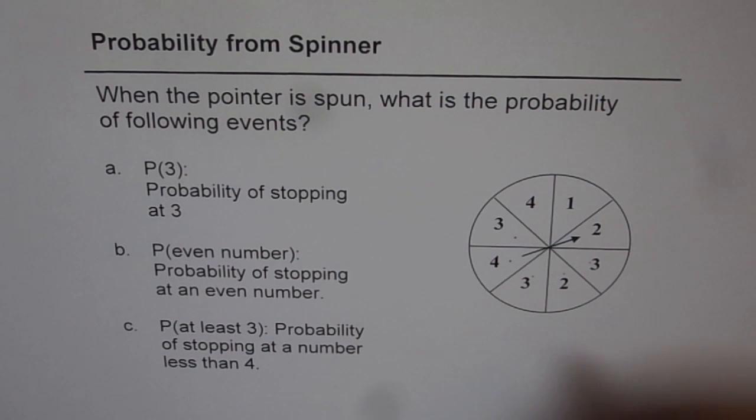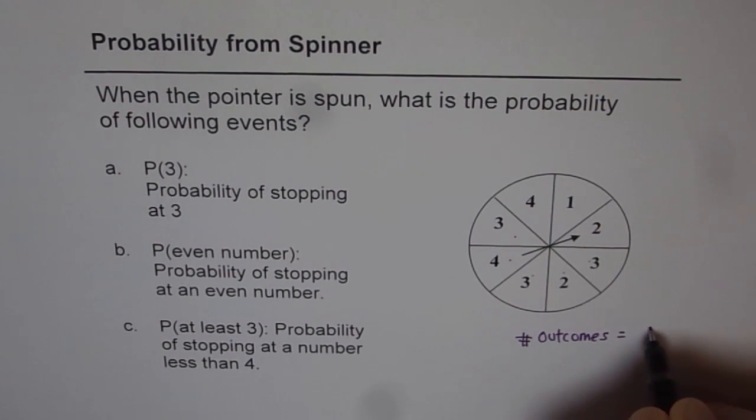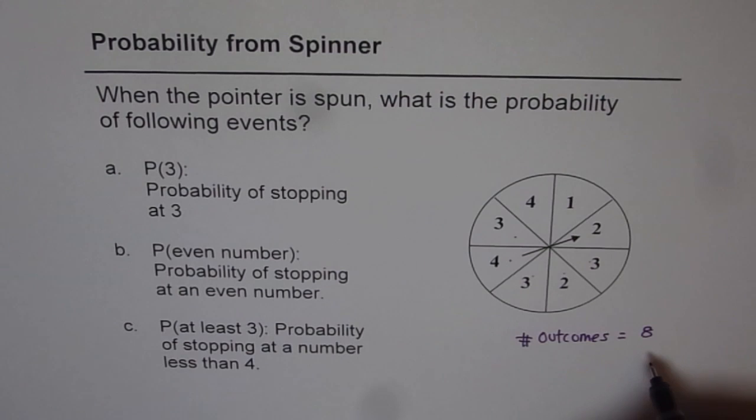So therefore total number of outcomes are 8. So we can write down number of outcomes equals to 8. Now that is always the denominator for us. And let us see what are the favorable chances for each probability.